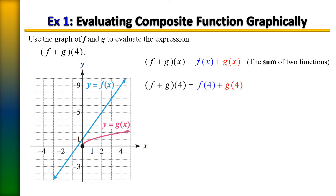Let's first find f of four. On the f of x function, which is indicated in blue, on the x-axis we're going to go to four. To get on that graph we have to move up one, two, three, four, five, six, seven, eight, nine — so therefore f of four equals nine.